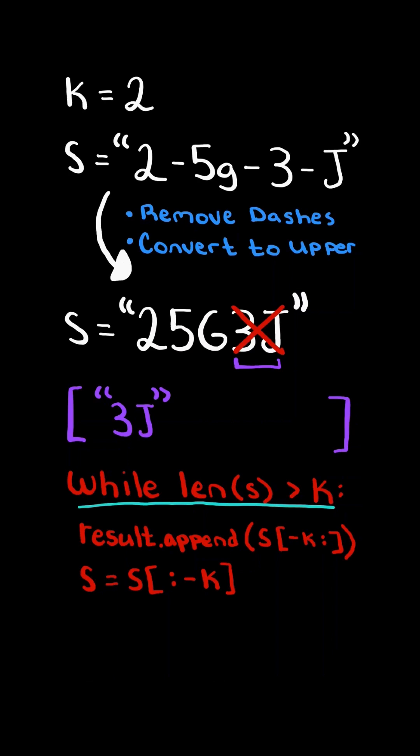And we continue this algorithm while the length of s is greater than k. We append the last k characters to the list, and then we update s by removing the last k characters. And we continue. Now notice the length of s is not greater than k.